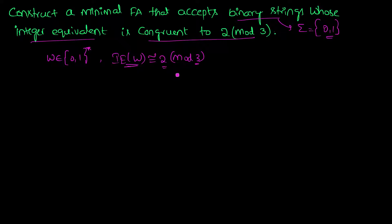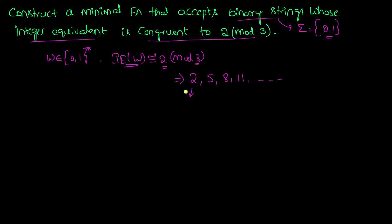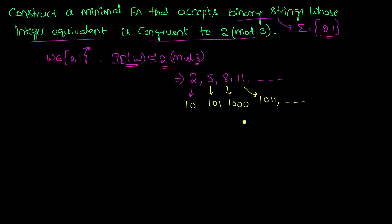What are all the numbers which leave a remainder of 2 when divided by 3? They are 2, 5, 8, 11, and so on. The corresponding binary strings are: 2 is 10, 5 is 101, 8 is 1000, 11 is 1011, and so on. Since we are dividing by 3, we have 3 possible remainders.